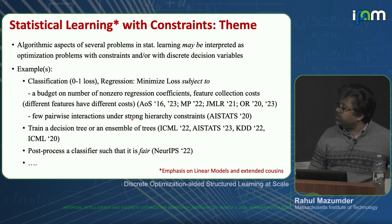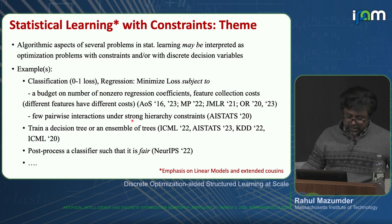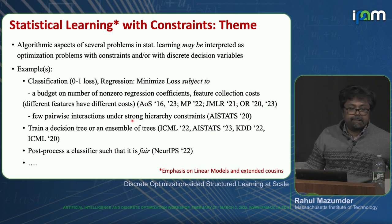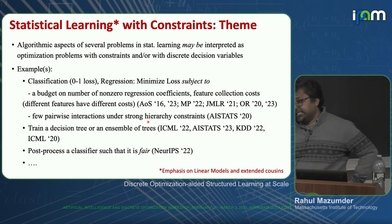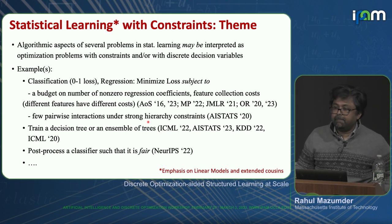An important interpretability constraint, taken from classical statistics, is strong hierarchy. Suppose we build a linear model with main effects and want to make it more flexible by including pairwise interaction effects. The number of interaction effects can be large. We often want to reduce both interaction and main effects. Strong hierarchy says the interaction effect between variables i and j should be included only if its parents are selected. Some people think this is an important constraint to have. It's a very discrete problem. Training a decision tree or an ensemble of trees is something I mentioned before.